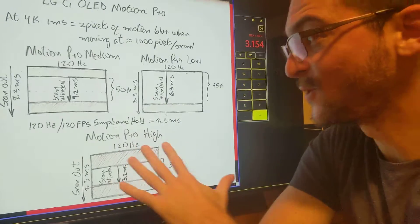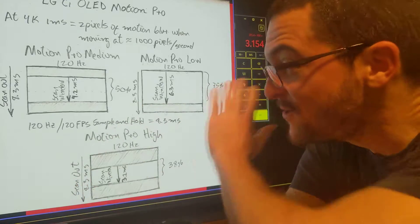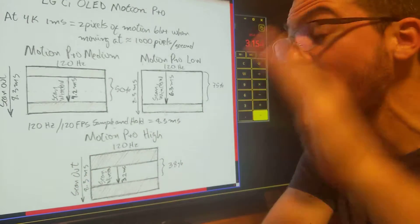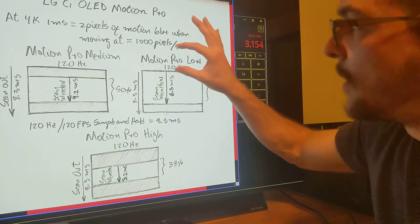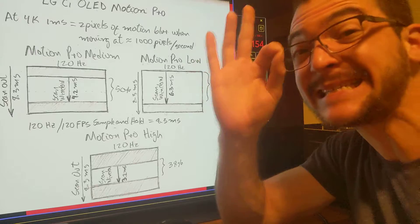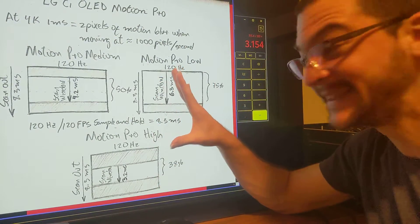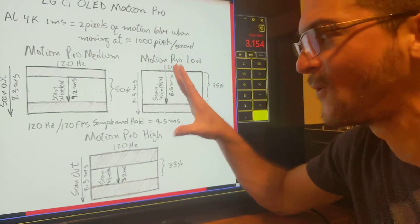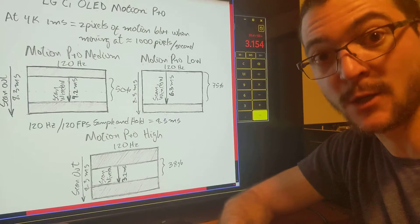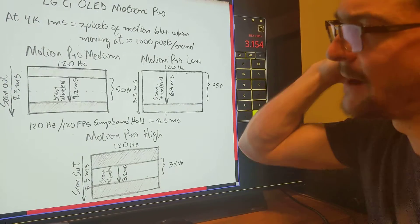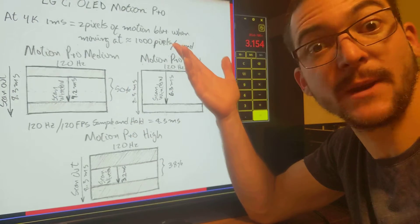The information I'm going to share with you on this video is top secret. LG is not telling you, and you cannot find this information on the internet. Nobody knows exactly what Motion Pro Low, Medium, and High are doing on the LG C1. I figured this out myself and I'm going to tell you how, so you can check this out, and I'm going to explain what this means and what you can do with this information.